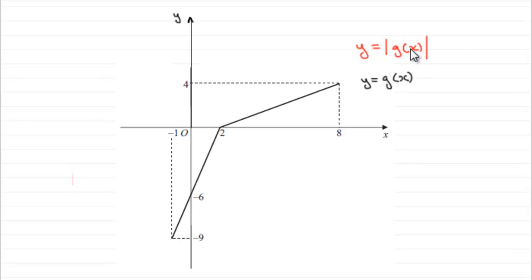Well, the mod returns any negative values and makes them positive. The negative values are these values on this branch here - these y values would be negative. So by putting a mod around it they become positive, and that has the effect of reflecting this part of the line in the x-axis.